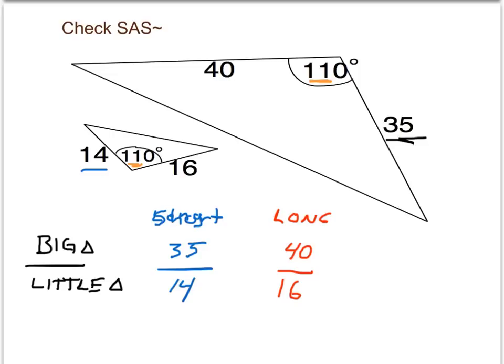The fraction 35 over 14 is divisible by 7, and that simplifies to 5 over 2. 40 divided by 16 — both 40 and 16 are divisible by 8 — and that also simplifies to 5 over 2. So that means that the two sides we know about are proportional, and the included angles are congruent. And so therefore, these triangles are indeed similar.